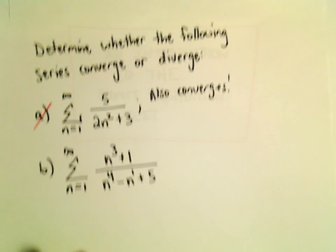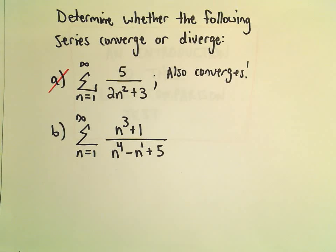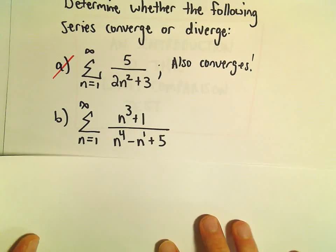Alright, so one more example here using the limit comparison test. So here we're going to look at the series 1 to infinity of n to the 3rd plus 1 over n to the 4th minus n plus 5.